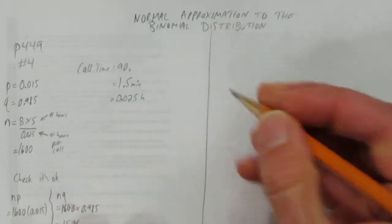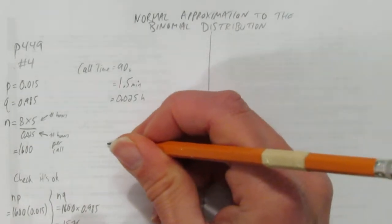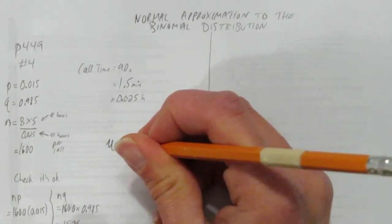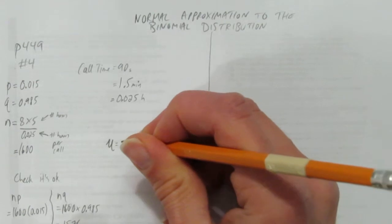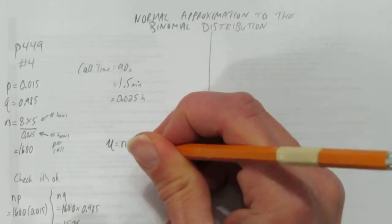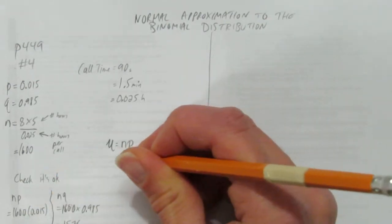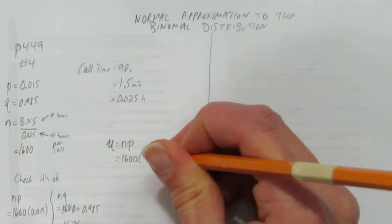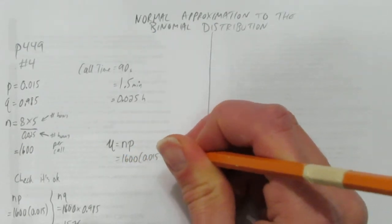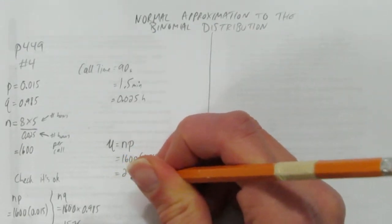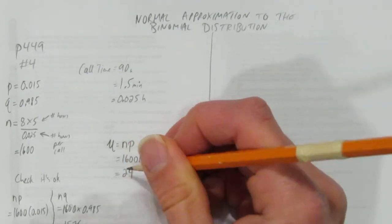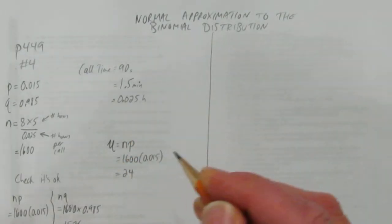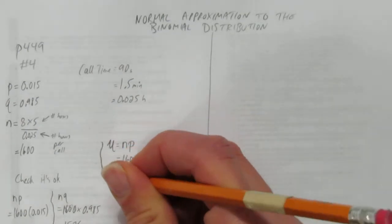But before we use that normal approximation, we need mu, the mean. We calculate the mean by doing N times P. And we already know N times P, we calculated it here. We quickly write our work out again just to show that the average, that is the mean, is 24 for this approximation.